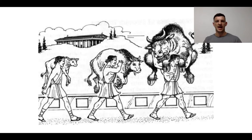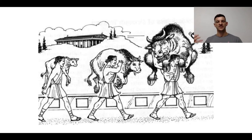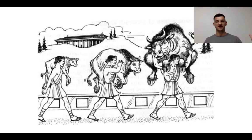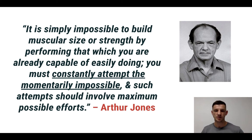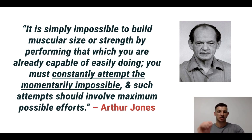This image beautifully captures the concept of progressive overload. We have the ancient Greek wrestler Milo of Croton, who was thought to have carried his own calf every single day, and as his calf grew, his strength would grow in proportion to the size of the calf, allowing him to carry a full bull. Arthur Jones put it well: 'It is simply impossible to build muscular size or strength by performing that which you're already capable of doing. You must constantly attempt the momentarily impossible, and such attempts should involve maximum possible efforts.'